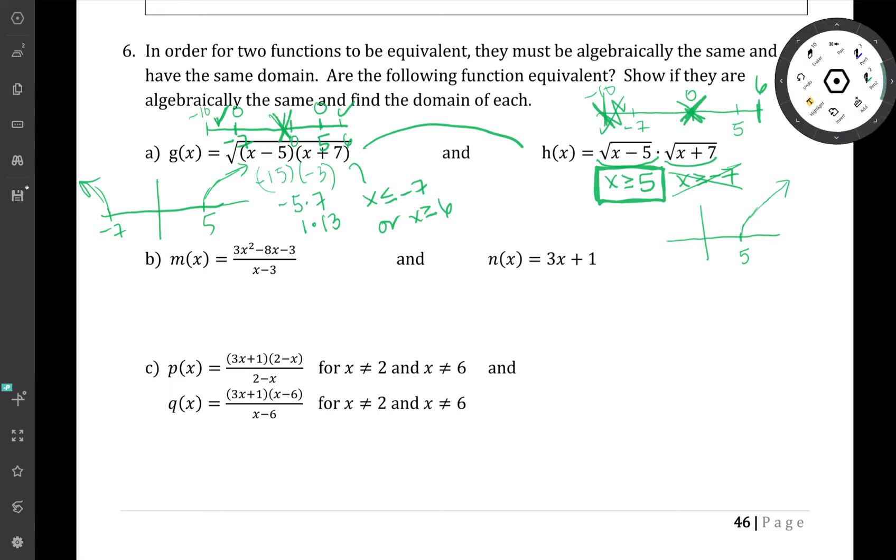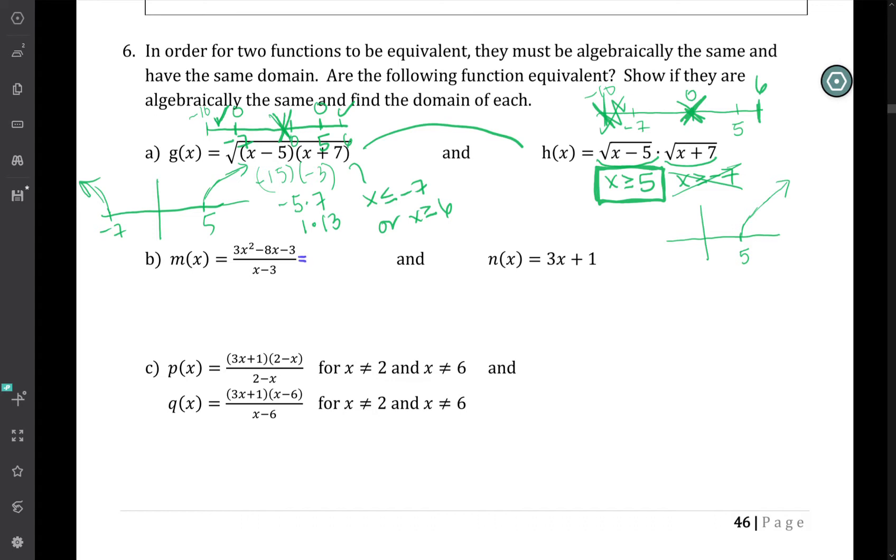For part b, it's kind of a similar thought process. What happens here is the top factors. Let me figure out what it is. I know I want a 3x and an x, and a 1 and a 3. Does that look true? I think so. Plus, minus. So then my outside is 9x, negative 9x, and my inside is 1x, and that does add up to negative 8. And what happens is I can cancel the x minus 3. So this is really what it's asking.